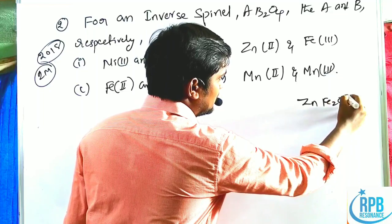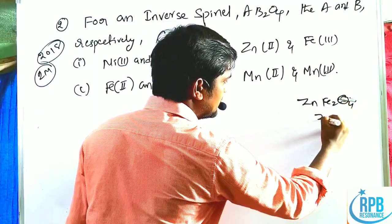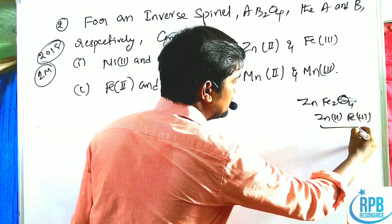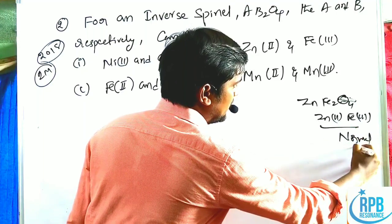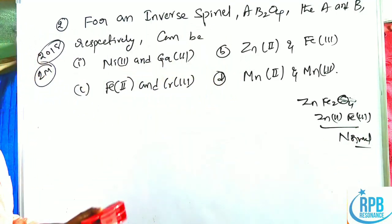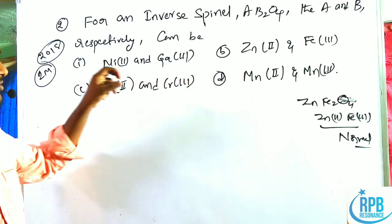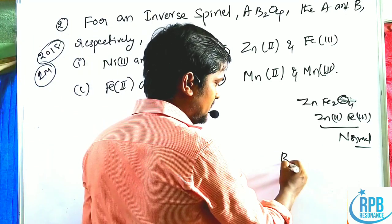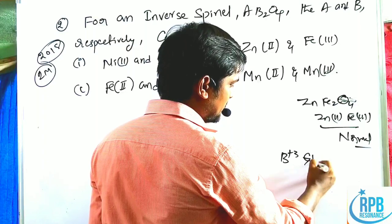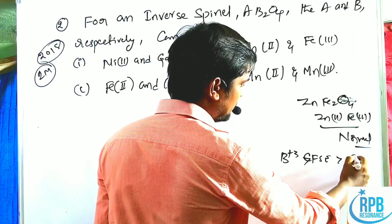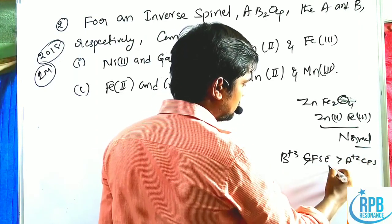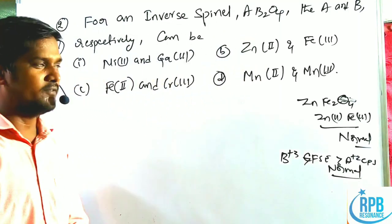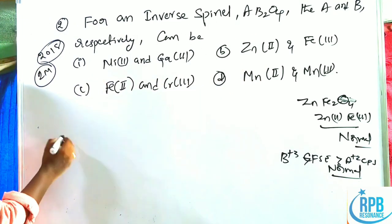We already discussed that ZnFe₂O₄, meaning Zn²⁺ and Fe³⁺, is a normal spinel. Based on CFSE values: if B³⁺ CFSE is greater than A²⁺ CFSE, it is a normal spinel; if the opposite, it is an inverse spinal.